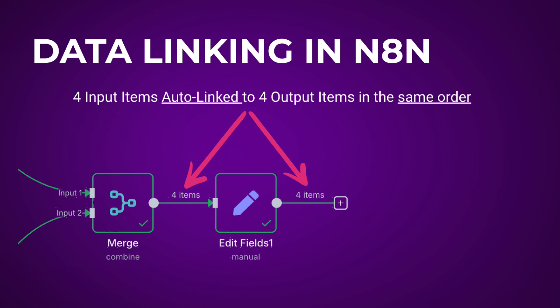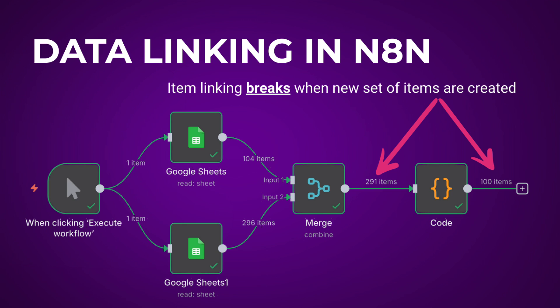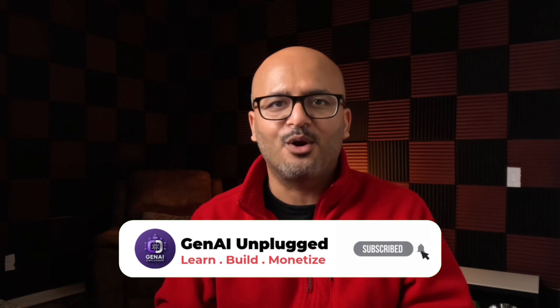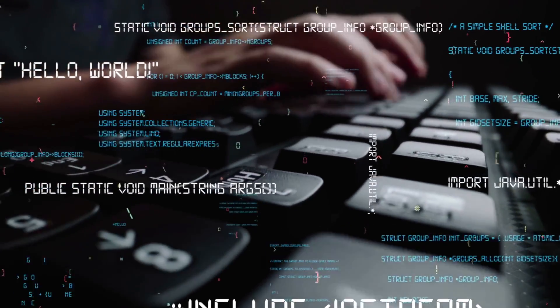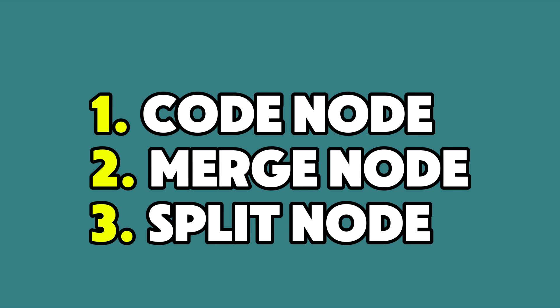Things get complex when you have multiple inputs and multiple outputs. If the number of inputs and outputs are equal, N8n links items in the order it receives them — output one links to input one, output two links to input two. If you keep the input items but change the order, N8n can still automatically add the correct links. However, if the number of inputs and outputs are not equal, or you create a completely new set of items, the item linking is totally broken. N8n cannot automatically link the outputted items back to the input items, so you need to be careful with CodeNode, merge nodes, or split nodes.